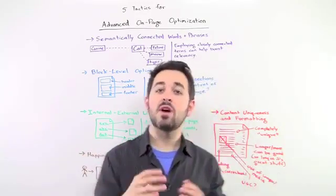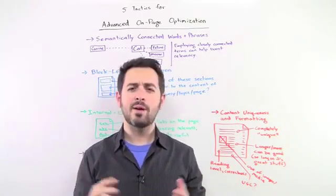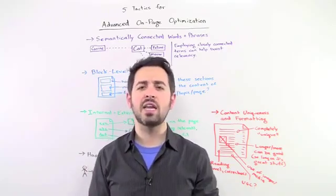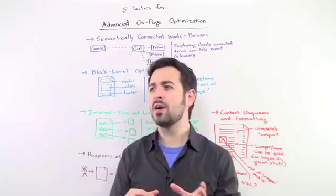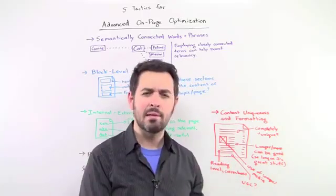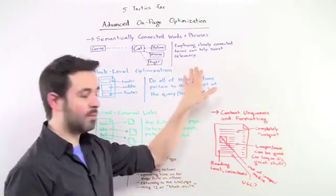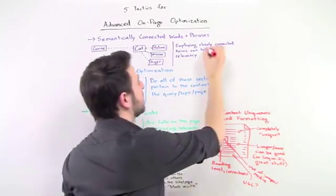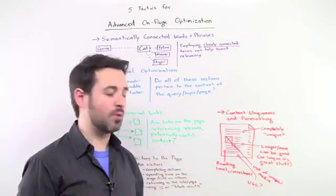This kind of thing can be very helpful if you're looking at a document and you're saying to yourself, I talk about cats, but I forgot to mention anything about what they eat or what family they're in or what they're related to. I didn't even use the word pets. Maybe I should be optimizing for those types of things. And employing those closely connected terms can help to boost the relevancy and help boost your rankings.